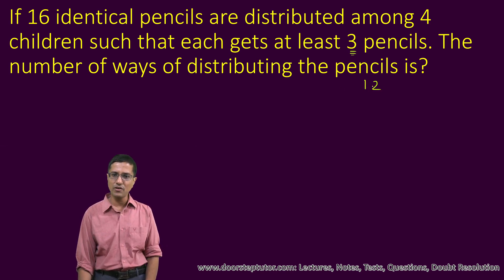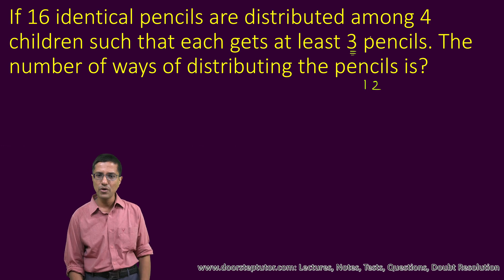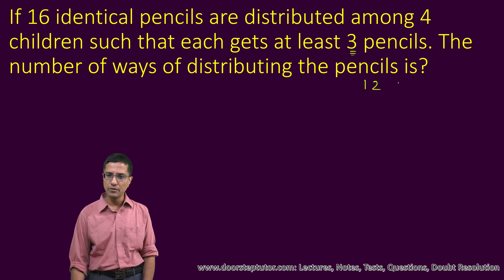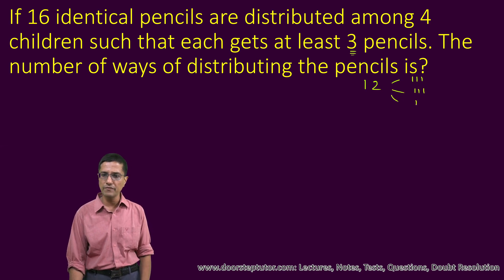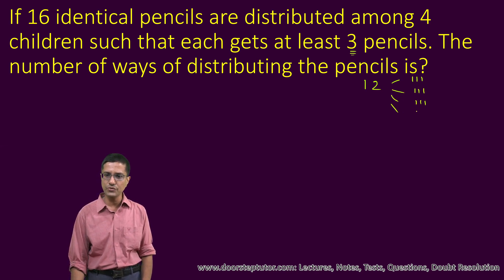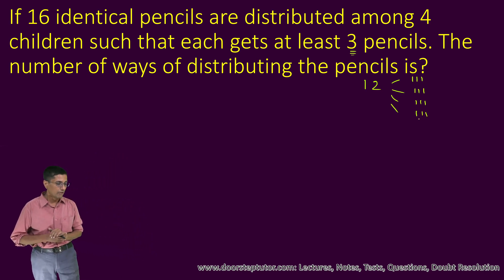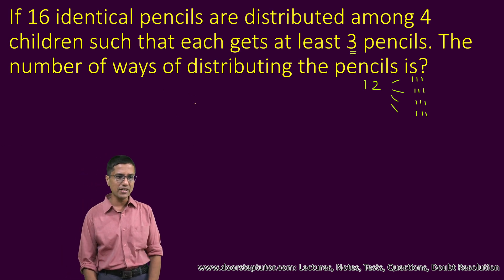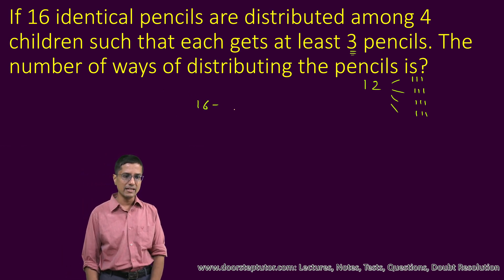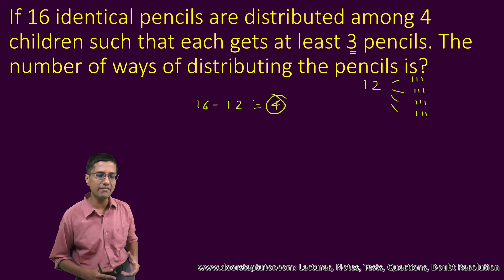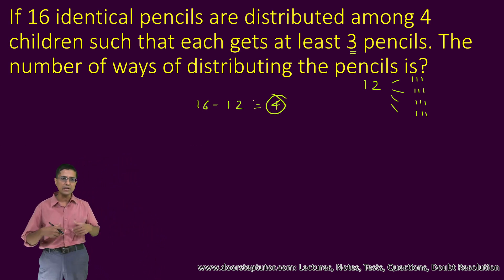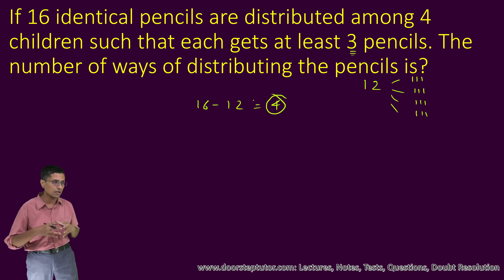The first condition is that each child must get at least three pencils, so twelve pencils have been accounted for. Those are guaranteed to be divided into groups of three each — each child gets three pencils, no other way around it. Where we have leeway is that after dividing those twelve pencils, the remaining four we can divide in any way we want, and that is where our permutations come into play.